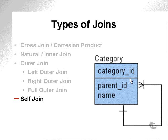A self-join would simply select a category and then select the parent based on the category, so you could match the parent name and the child name — for instance, a category and a category group. It's just important to remember that a self-join is a join on the same table, a table joining to itself.